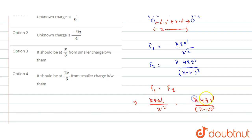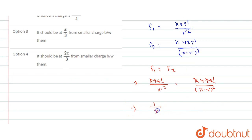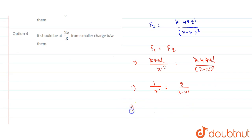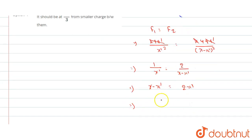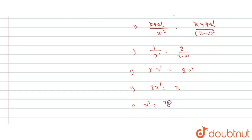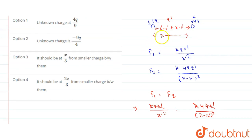The k, q, and q' terms cancel out, giving us 1/x'² = 4/(x − x')², which simplifies to (x − x') = 2x'. Therefore 3x' = x, and we get x' = x/3. So the third charge must be placed at a distance x/3 from the smaller charge +q. This confirms that option 3 is correct.